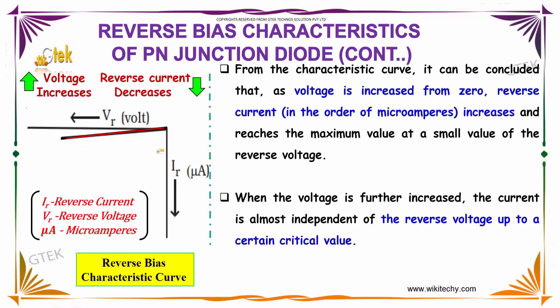From the characteristic curve, it can be concluded that as the voltage is increased from zero, reverse current in the order of microamperes increases and reaches the maximum value at a small value of the reverse voltage.